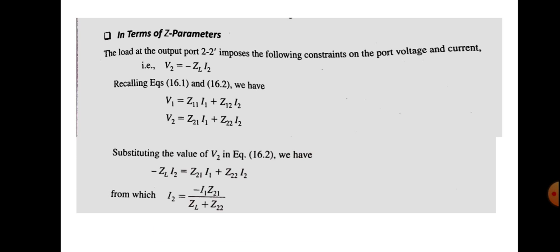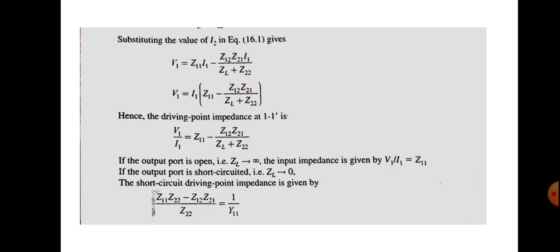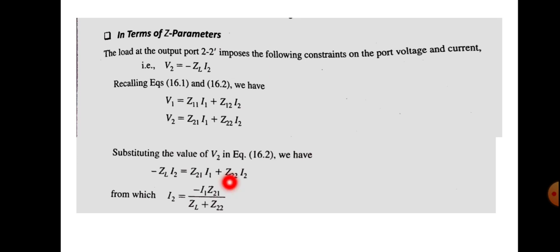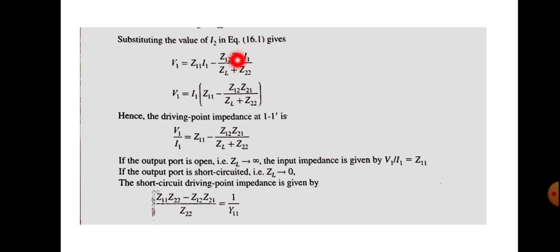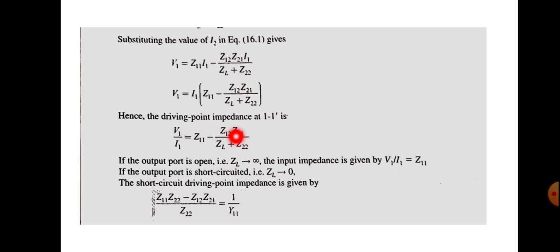Our aim is to represent the input impedance in terms of Z parameters. Substituting I2 into equation 16.1, we get V1 = Z11·I1 − Z12·[Z21·I1 / (Z_L + Z22)]. Taking I1 outside: V1 = I1·[Z11 − Z12·Z21 / (Z_L + Z22)]. Therefore V1/I1 = Z11 − Z12·Z21 / (Z_L + Z22), which is the driving-point impedance at port 1-1' — the input impedance expressed in terms of Z parameters.